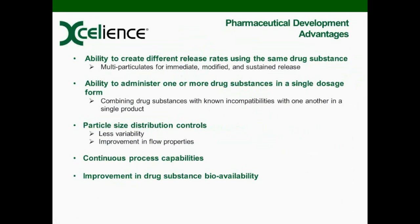One of the things we face mostly in formulation and product development is flow properties of materials. Particle size distribution control is one of the advantages of extrusion spheronization. Most of us have battled flow properties with drug products and drug substances at high drug loads that may not have very good flow. With this particular process, we'll be able to control the particle size distribution, providing less variability and improving flow properties. The extrusion spheronization process is also a continuous process, and there are capabilities there that we will look into as we get into the presentation.